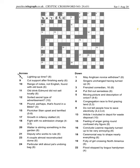Then we'll do one down, may Anglican novice withdrawal. So may I can, so we can have can, Anglican CE for Church of England, novice L. If you cancel something you might withdraw, so that's one down.